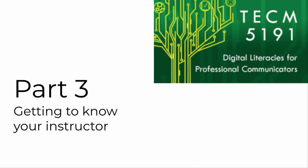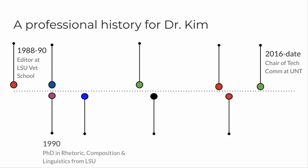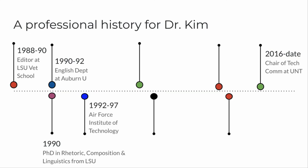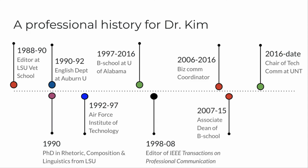Let me close this introductory lecture by helping you get to know a little bit about me. I'm at UNT — in 2016 I joined the university as a professor and chair of the tech comm department. Here's a brief professional history leading up to that. My lifelong passion for language eventually led me to grad school to study linguistics and technical writing. While in school in the late 1980s I worked as a technical editor. I earned my PhD from LSU in 1990 after completing a dissertation on applications of discourse analysis to professional writing. My first job as a professor was in the English department at Auburn University. In 1992 I began work as a professor and researcher at the Air Force's postgraduate school. In 1997 I joined the business school at the University of Alabama, where I stayed for 19 years. During that time I served as the editor of an IEEE research journal for more than 10 years, and I also held some administrative positions.